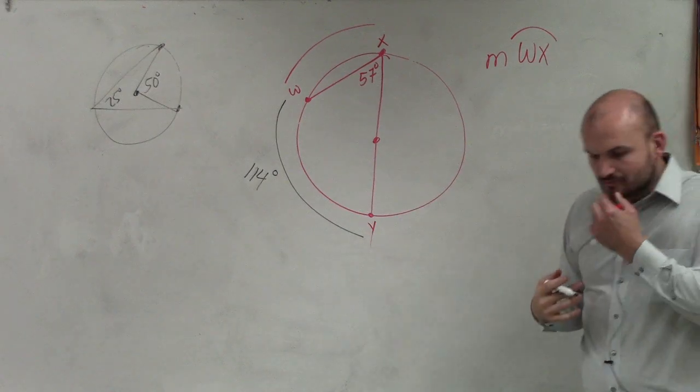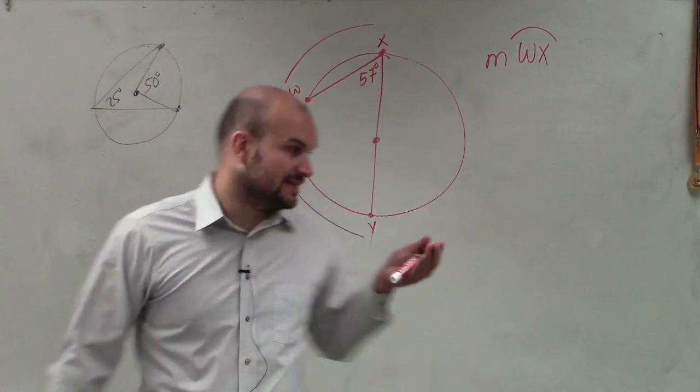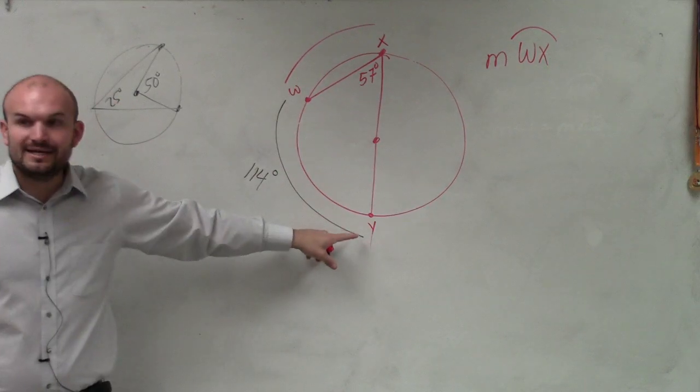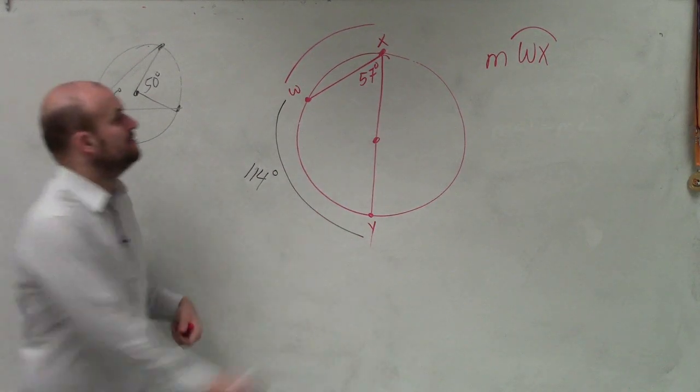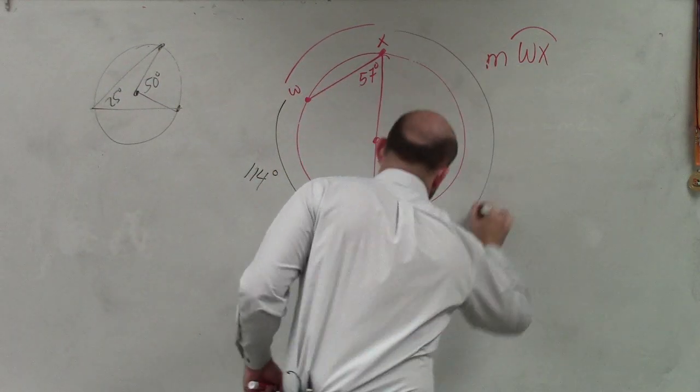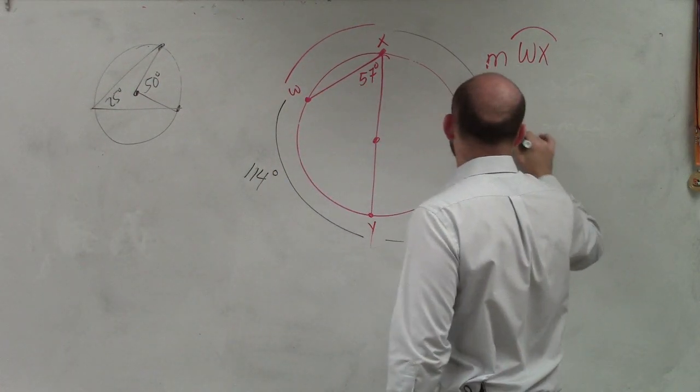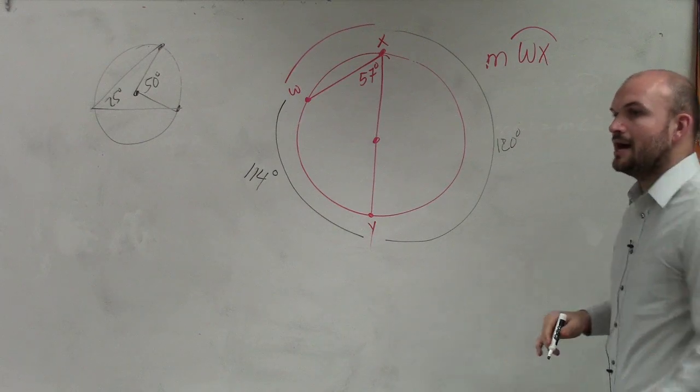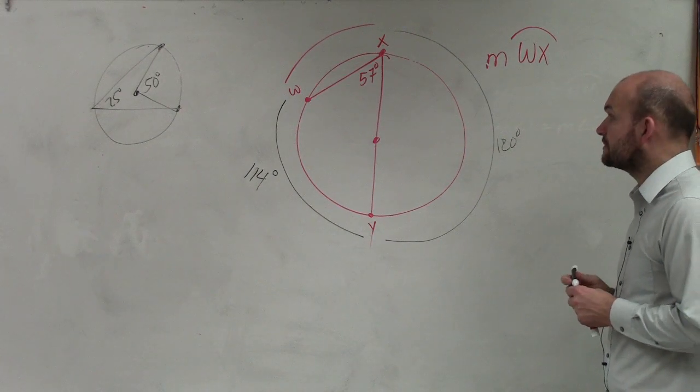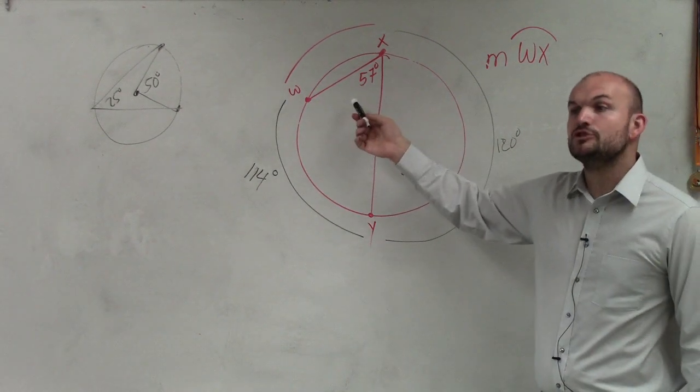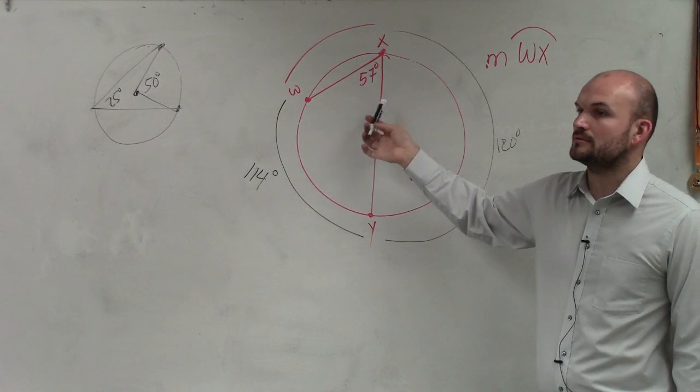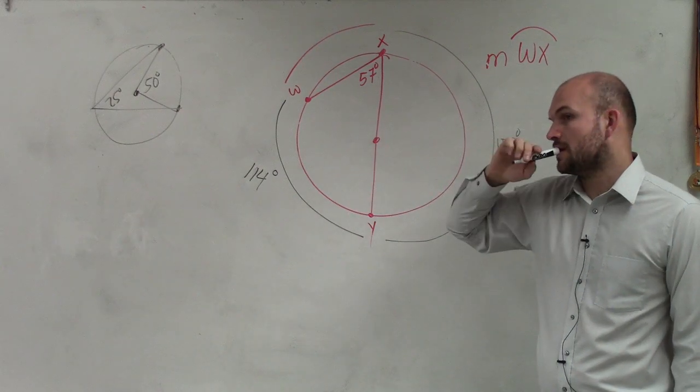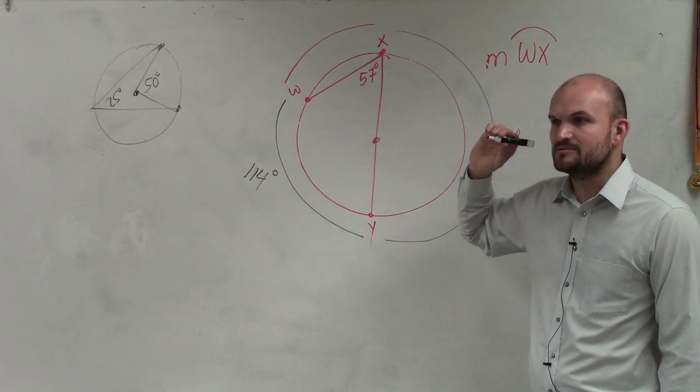Now we notice that the line x to y is the diameter. That means it's going to cut the circle in half, meaning from here to here is 180 degrees. Yes, 57 times 2. 50 times 50 is 100, 7 times 2 would be 14, so it's 114. Just 57 times 2.